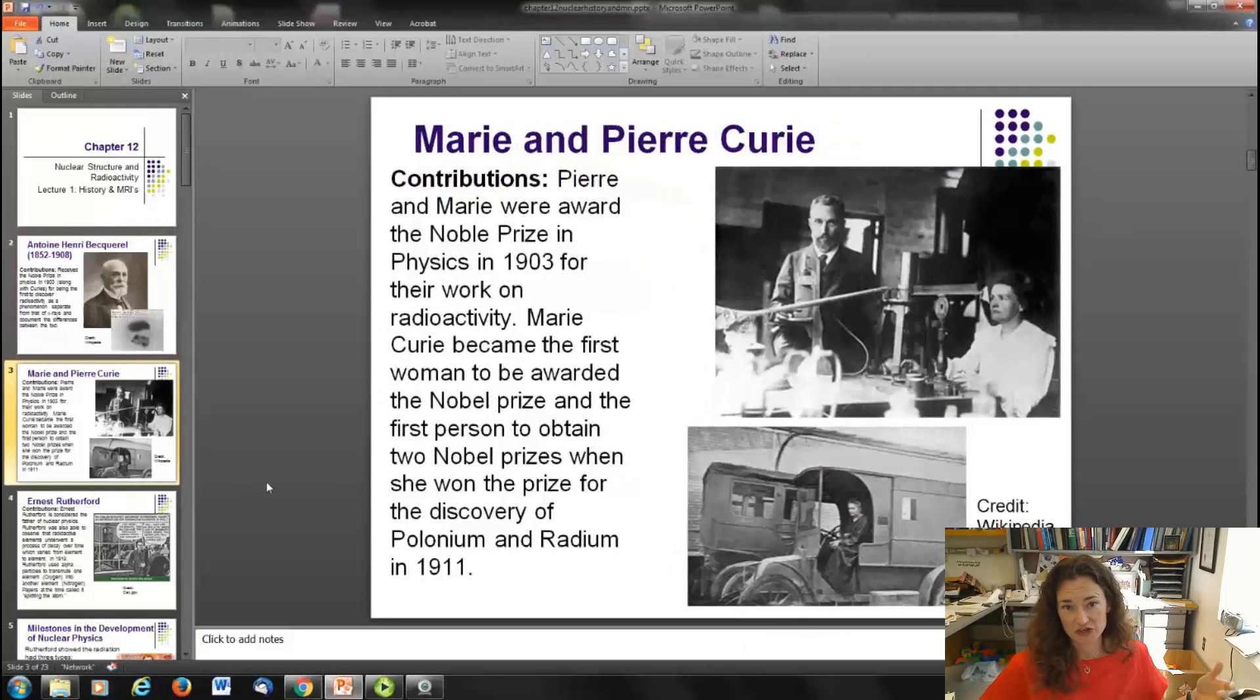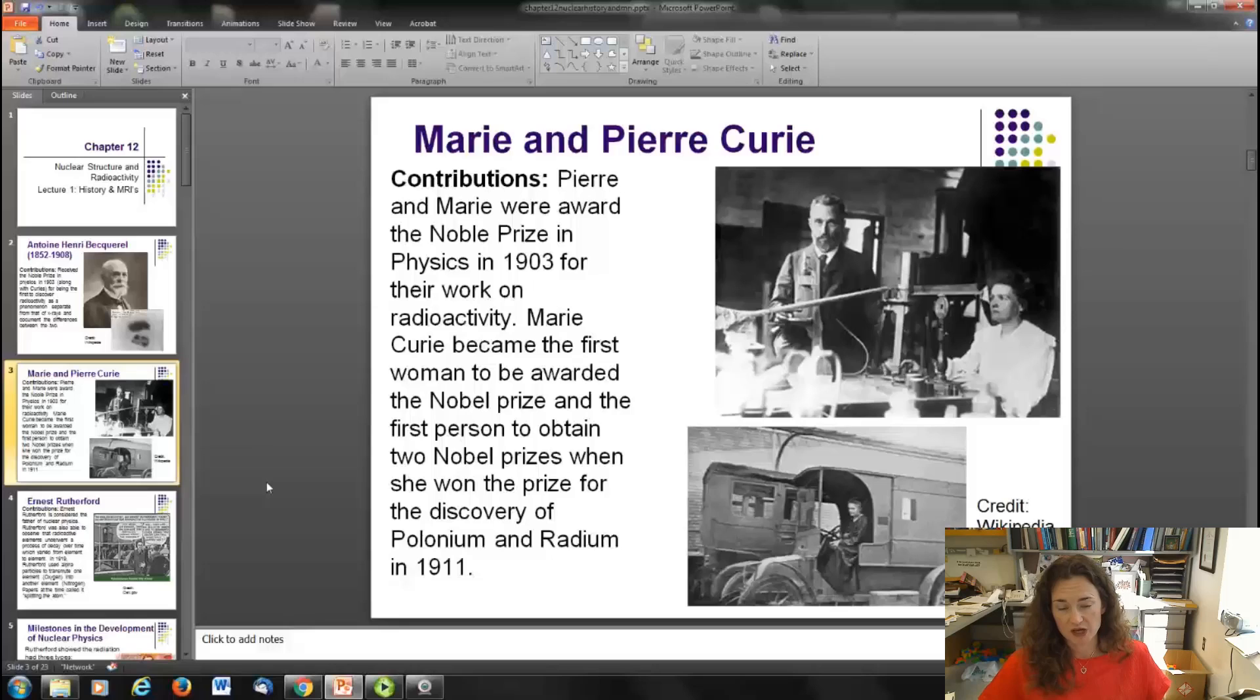Pierre and Marie Curie were awarded the Nobel Prize along with Becquerel in 1903 for their work on radioactivity. Marie Curie was the first woman to be awarded the Nobel Prize, and she was also the first person to obtain two Nobel Prizes. She won the second Nobel Prize for the discovery of polonium and radium in 1911 when they isolated it.